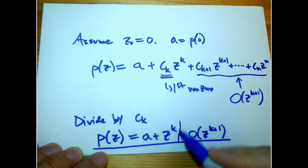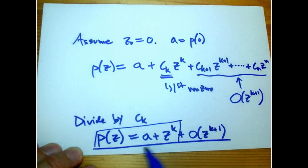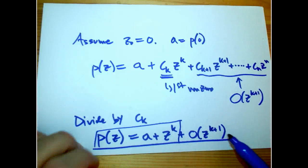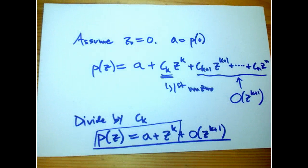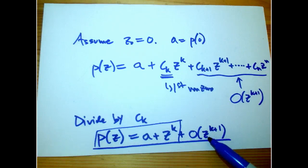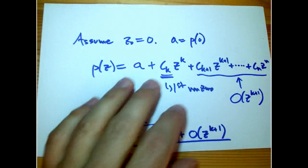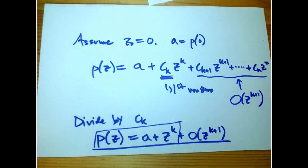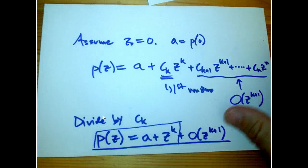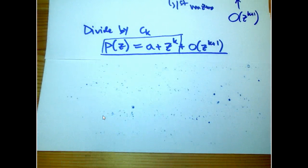So it gets down to this case, and hopefully this looks familiar — we know how to solve that problem. All we have to do is make sure the higher order terms don't interfere. If we're close to zero, a complex number that's close to zero raised to a high power is going to be very, very small — and in particular smaller than the leading terms. So we're almost home free. Let me scroll down on my cheat sheet.